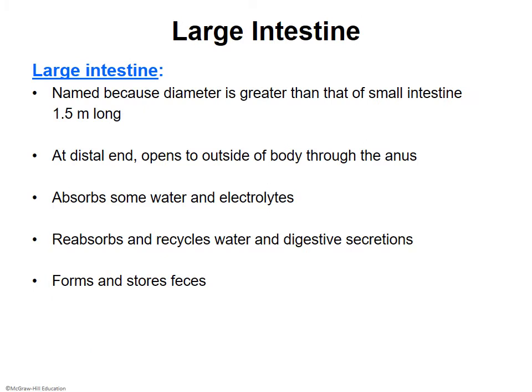The large intestine is named because of its greater diameter — it is shorter than the small intestines but larger in diameter. It is the last station along the alimentary canal, ending with an opening called the anus. It does not have many absorptive duties; the main one is water, though it also absorbs electrolytes and some vitamins — electrolytes being ions such as calcium, potassium, and sodium.